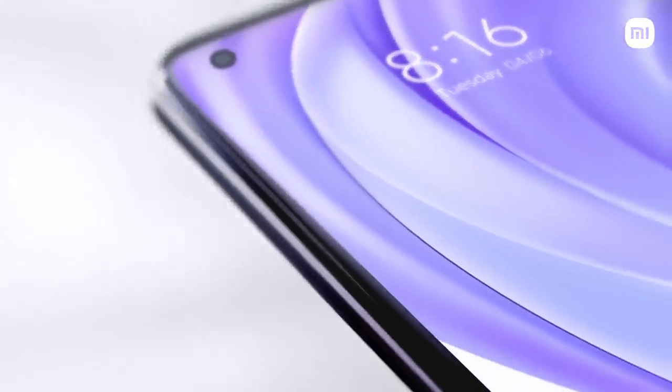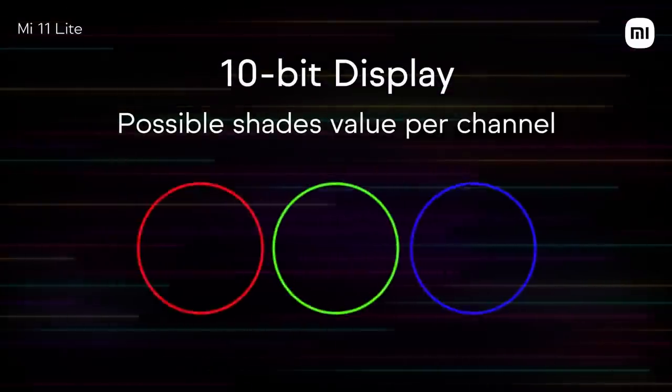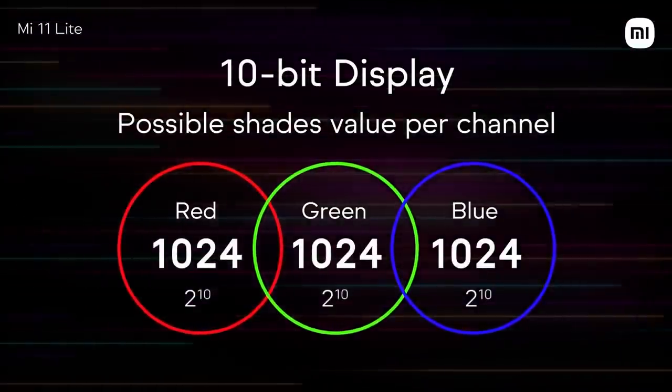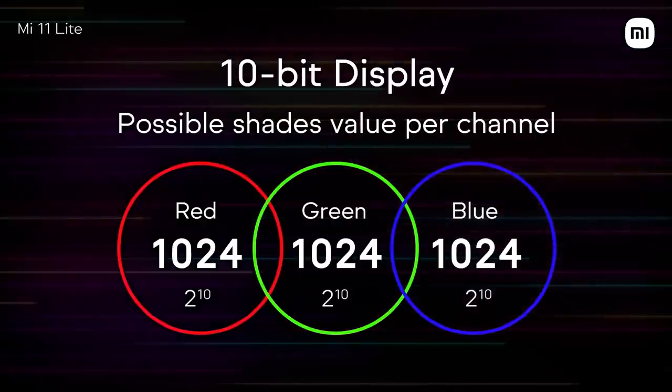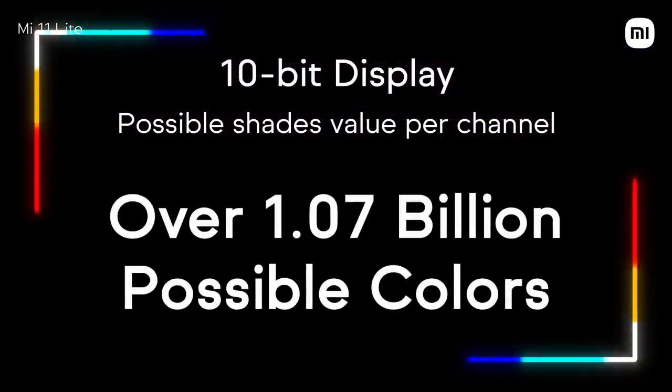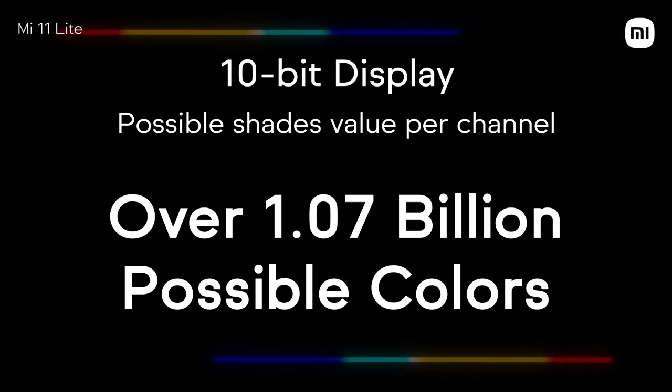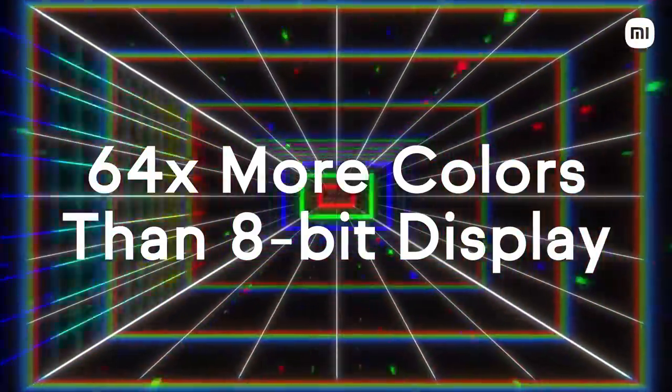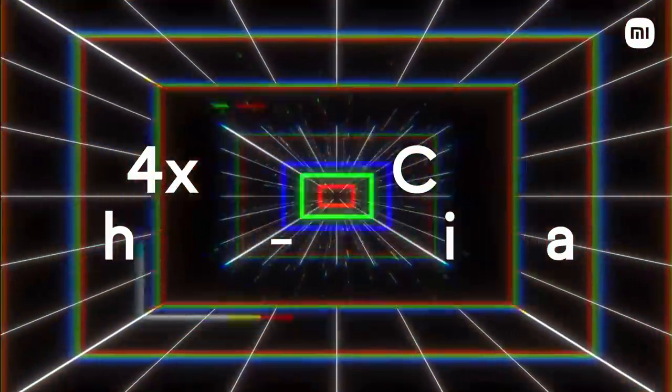A 10-bit display carries 1024 shades of red, green and blue colors, which means that it can produce 1.07 billion colors instead of just 16.7 million colors which you saw earlier on the 8-bit panel. This is 64 times more color information being decoded by a 10-bit panel when compared to the 8-bit panels.